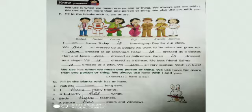Second: I have many friends. Here the subject is I, so we use have. Third: A butterfly has wings. A butterfly is only one — a singular subject — so we use has.